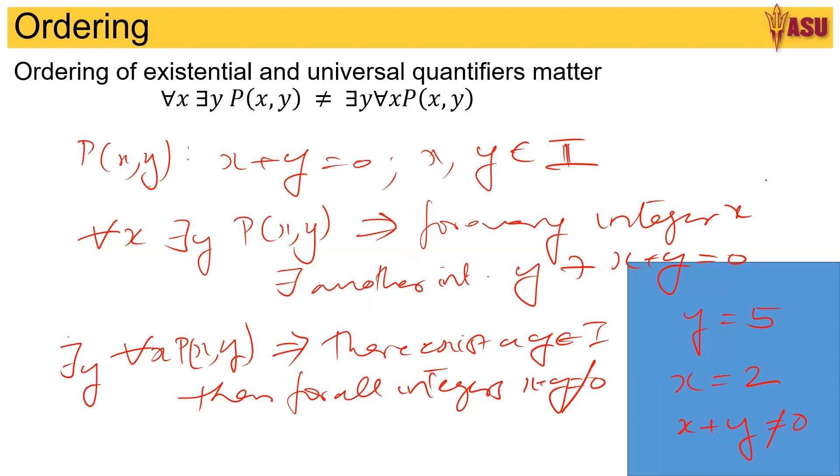Whereas in the above case here, if x equals 5, then there exists a y. So y will be minus 5. But that's not true in the other case. So we clearly see that for all x there exists y, P(x,y) is not equal to there exists y for all x, P(x,y).